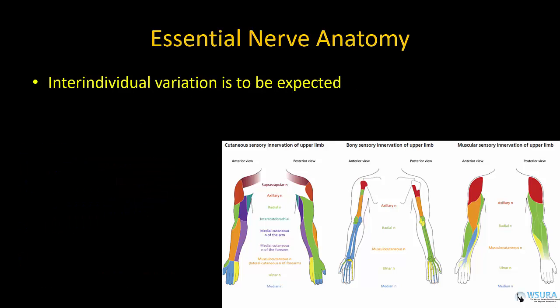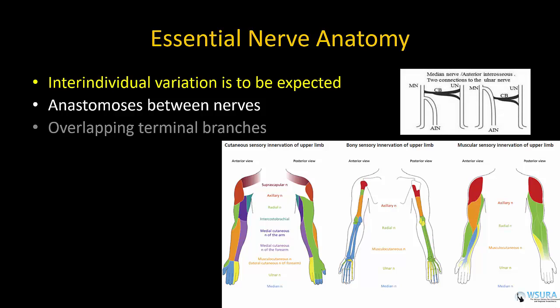Note, however, that these maps, no matter how pretty, rarely fit any individual patient. There is tremendous inter-individual variation due to anastomosis between adjacent peripheral nerves, overlap in terminal branches, and variation in branching anatomy.